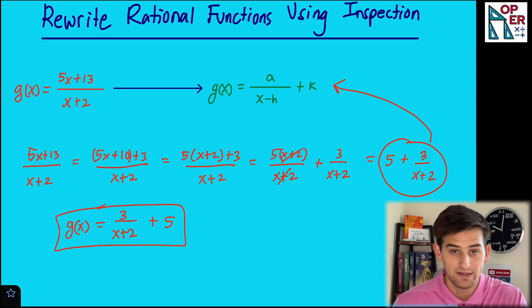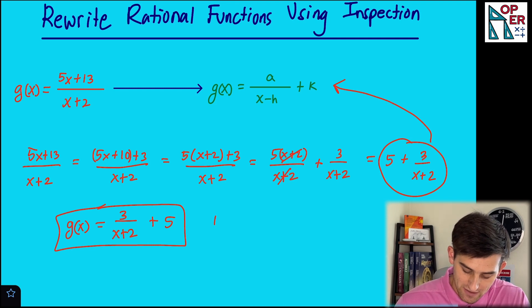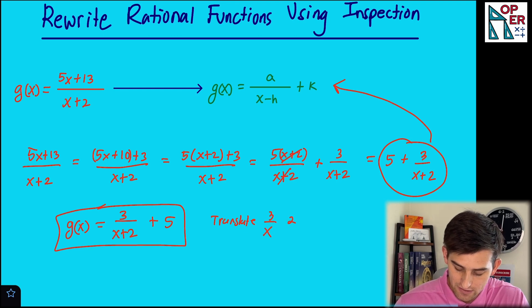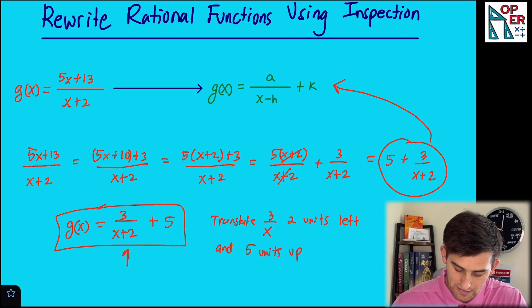So that's how we could rewrite that fraction or function. And now what does that tell us? That tells us that we translated the function 3 over x. We translated it 2 units to the left - that's what the x plus 2 represents - and we translated it 5 units up, and that's what the plus 5 represents at the end.